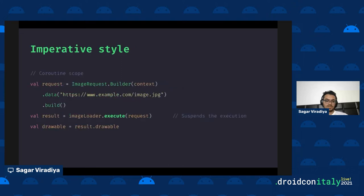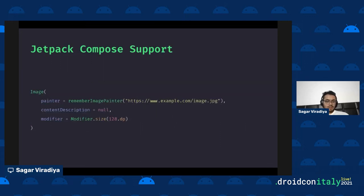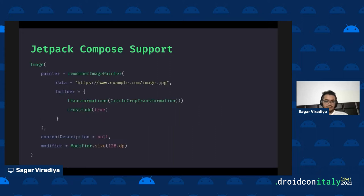COIL also has support for Coroutines. Instead of calling `enqueue`, you call `execute`, which is a suspending function. It will suspend execution of the coroutine and return a result that you can then consume within the coroutine context. It also has support for Jetpack Compose — you call `rememberImagePainter`, which internally creates an ImageRequest and passes it to the ImageLoader. Similar to what we saw previously, you pass a lambda with receiver on ImageRequestBuilder for customizations like transformation and crossfade.